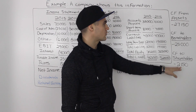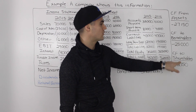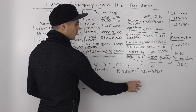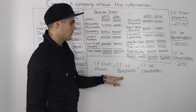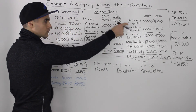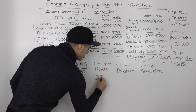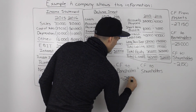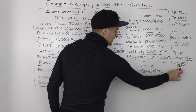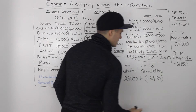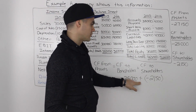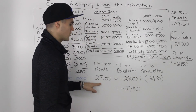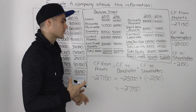With all three figures calculated, we can check our answer with the general formula: cash flow from assets must equal cash flow to bondholders plus cash flow to shareholders. Our cash flow from assets was negative $27,150. Cash flow to bondholders was negative $25,000, and cash flow to shareholders was negative $2,150. Taking negative $25,000 plus negative $2,150 gives negative $27,150 — both sides are equal, so we can be confident we got the right answer.